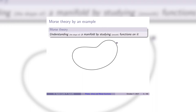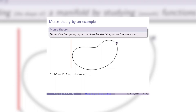Morse theory is basically the business of understanding the shape of a manifold by studying smooth functions on the manifold. It's definitely best to lead this with an example. Here's a nice manifold sitting inside the plane. There are some very natural smooth functions you might put on this manifold to try and say something about the shape. The most natural set are: you specify some line and you ask about the perpendicular distance of points on the manifold from the line. You can think of this as the process of taking that line and moving it across the manifold and looking at the various cross sections you get.